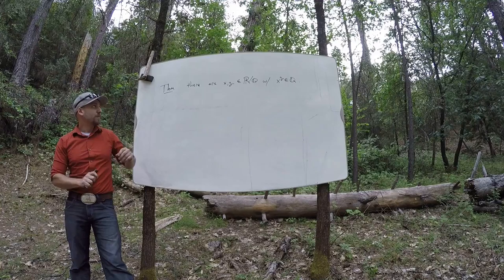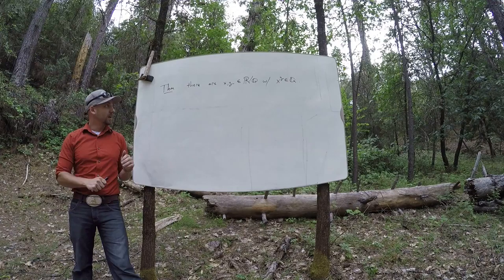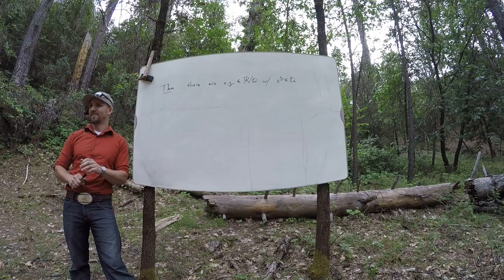Okay. So here's a little theorem. There are a pair of irrational numbers, x and y, with x to the y as a rational number. It's a little bit surprising, right?